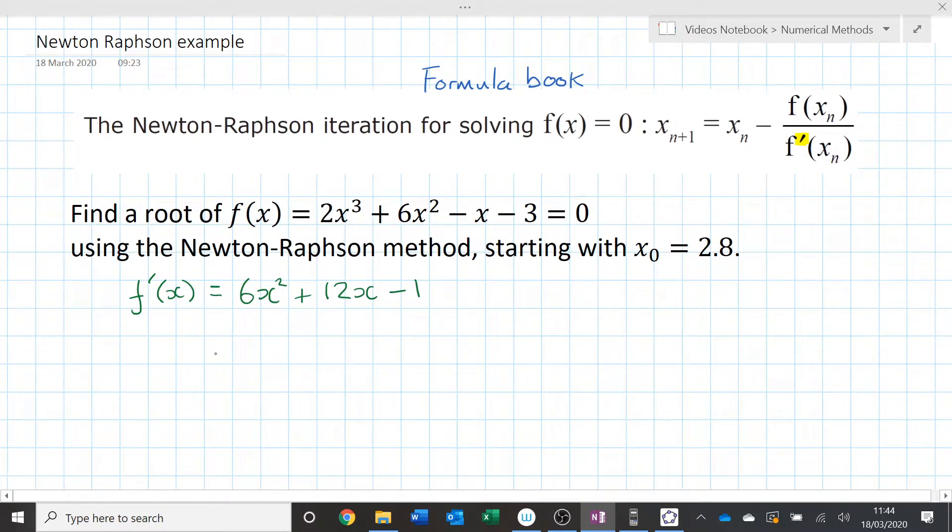Now we're going to write the iterative formula. Make sure you put the xn+1s and the xns in there. You must show your iterative formula clearly and you must put the n+1s and the ns in there. It is not good enough to just write x. So this is the iterative formula. xn+1 is equal to xn minus the function but with xns everywhere.